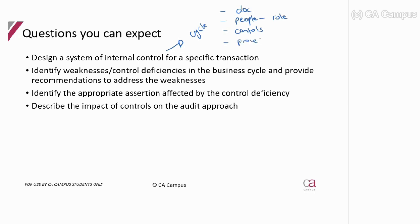You'd cover the cycle from initiating the transaction through to it ending in the financial statements. The most common exam question type is identifying weaknesses or control deficiencies in a cycle — like the revenue cycle question we did. You compare their actual cycle to what the cycle should look like and pick up where controls are missing or not working.